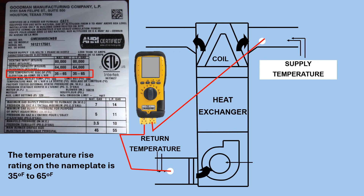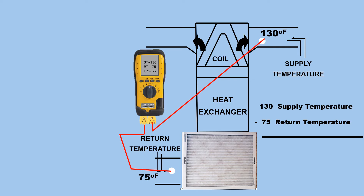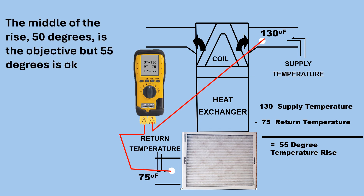So this is where we're going to take our temperature rise. You can see we have our two holes cut and out of the way of the radiant heat. The temperature rise rating on the nameplate is 35 to 65 degrees, as we see in the highlighted space there. So if we have a supply temperature of 130 and a return temperature of 75, that gives us a 55-degree temperature rise. The middle of the range — 50 degrees — is the objective, but 55 degrees is okay.